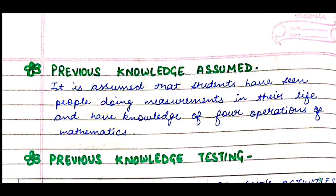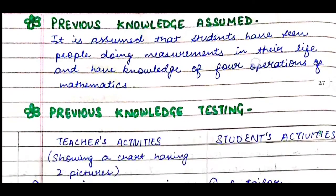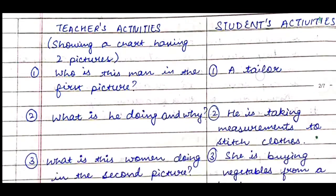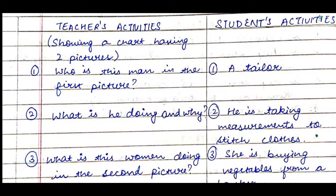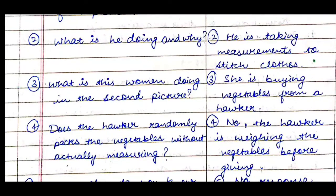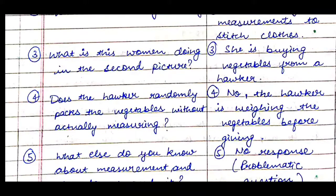The four operations of mathematics are addition, subtraction, multiplication, and division. Then comes previous knowledge testing, where we make two columns: teacher's activities and student's activities. The teacher will show a chart with two pictures and ask questions. First question: 'Who is this man in the first picture?' Students will say: 'A tailor.' Then: 'What is he doing and why?' They'll answer: 'He is taking measurements to stitch clothes.'